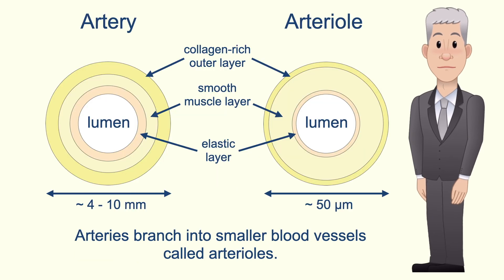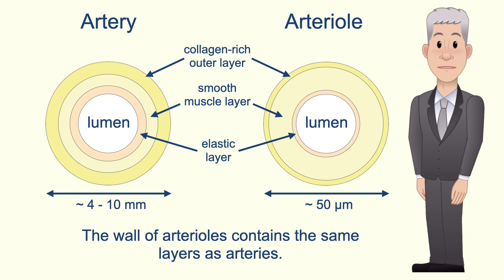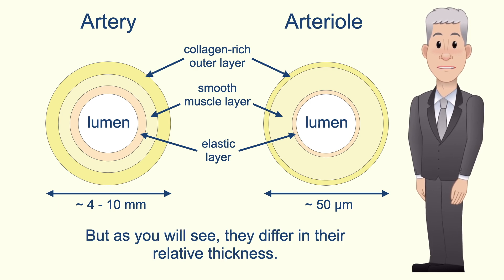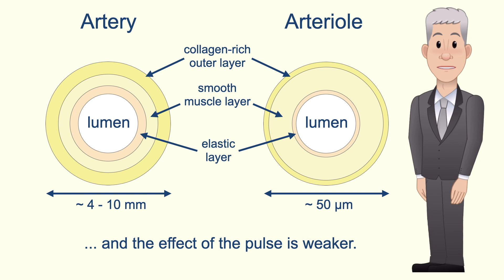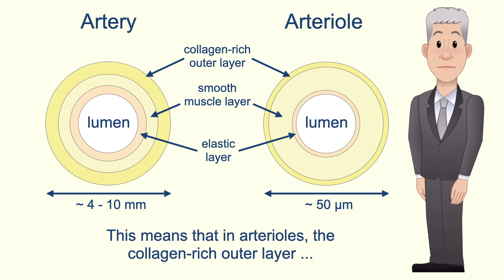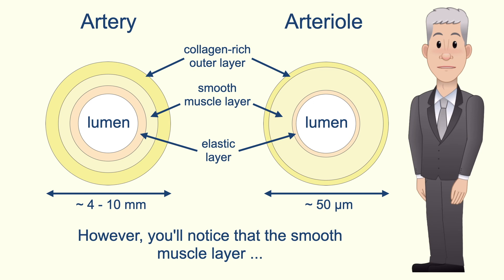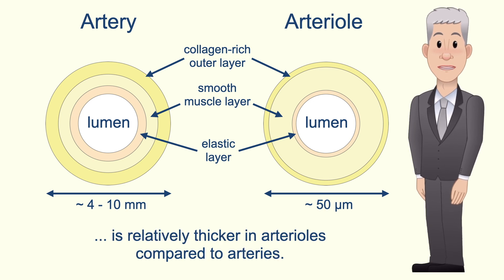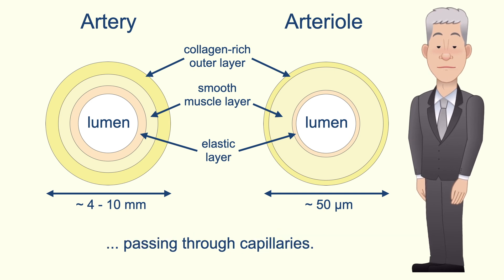Arteries branch into smaller blood vessels called arterioles, whose job is to deliver blood to capillaries. The wall of arterioles contains the same layers as arteries, but they differ in their relative thickness. In arterioles the blood pressure is lower and the effect of the pulse is weaker, so the collagen-rich outer layer and the elastic layer are relatively thin. However, the smooth muscle layer is relatively thicker in arterioles because they are involved in controlling the amount of blood passing through capillaries.